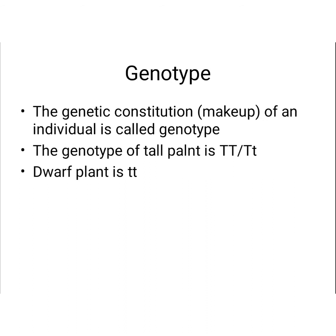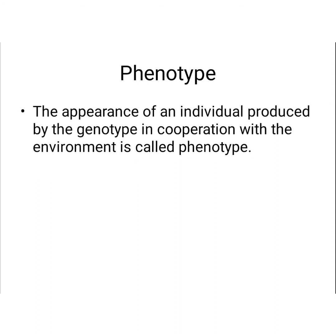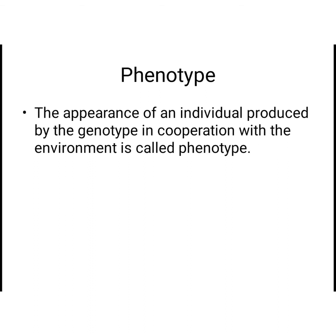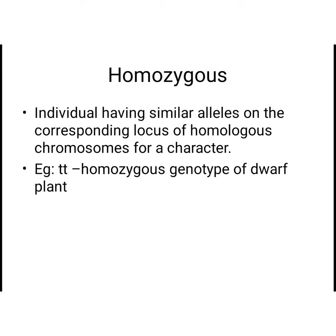What is genotype? Genotype is the genetic constituent or makeup of an individual. The genotype of a tall plant is TT or Tt — both express tall plant. The genotype of a dwarf plant is tt. What is phenotype? Phenotype is the morphological features or appearance of an individual produced by genotype in cooperation with the environment. Phenotype is what we see from outside — it is the visible expression.